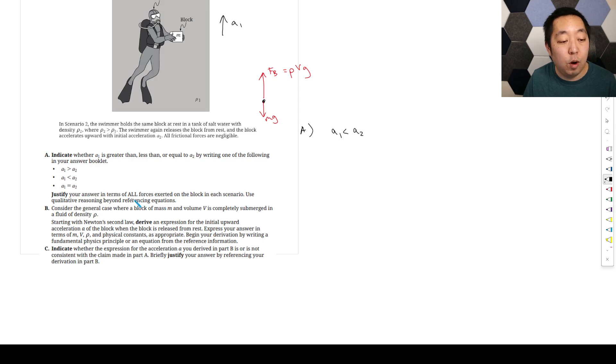Okay, justify your answer in terms of all forces exerted on the block in each scenario. They're hinting that you need to talk about why that is. So when he releases it, there's a buoyant force.